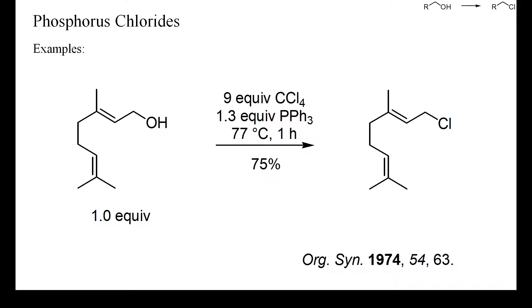This is a typical deoxychlorination of an allylic alcohol with carbon tetrachloride and triphenylphosphine. The main advantage of carbon tetrachloride as chlorinating reagent for phosphines is the high selectivity. Olefins and most other nucleophiles do not react with carbon tetrachloride. Furthermore, carbon tetrachloride is inexpensive and readily available.